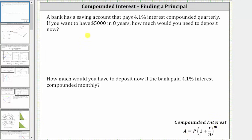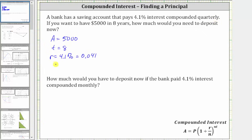In this problem, because you want to have $5,000 in eight years, A, the amount after time T, is equal to 5,000. And since T is the time in years, T is equal to eight. Because the account pays 4.1% interest compounded quarterly, R as the interest rate expressed as a decimal is equal to 4.1%, which is 0.041. The number of compounding periods per year N is equal to four, since the interest is compounded quarterly and there are four quarters in a year. Finally, P is the principal starting amount, which we are trying to solve for — P is unknown.